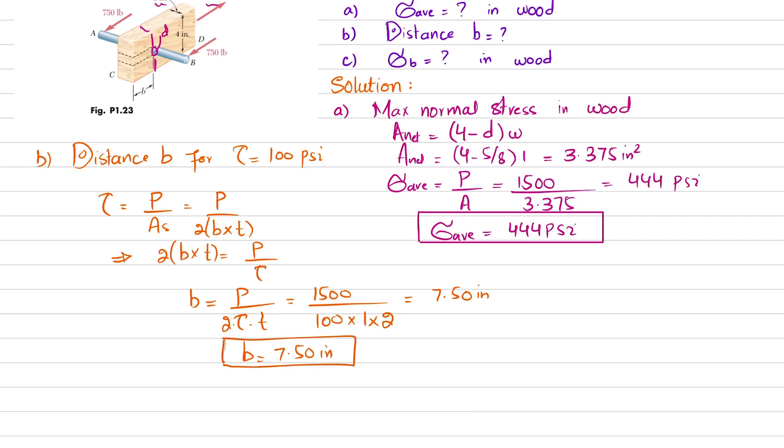And in third part, part C, average bearing stress on wood. We know that average bearing stress on wood is bearing force divided by the bearing area. So bearing area is this one, diameter into thickness T. This is diameter and this is thickness T.